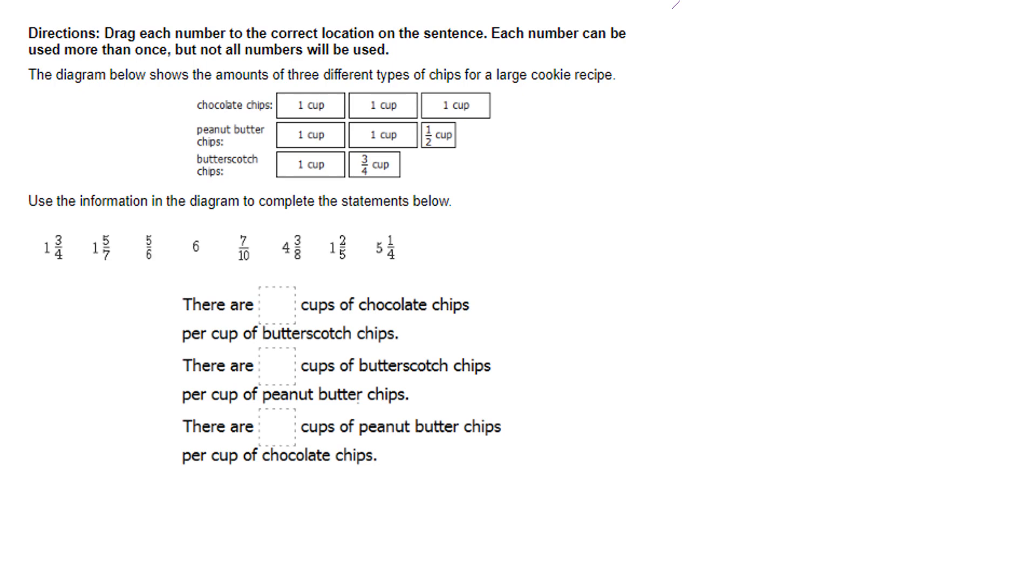The diagram below shows the amount of three different chips for a large cookie recipe. Chocolate chips, let's say one cup, two cup, three cups. I'm going to write down three cups over here. And then, for peanut butter chips, I have one, two and a half. So, I'm going to write two and a half cups. And then, the last one is one and three quarters, or 1.75 cups. I know that these answers down here are in fractions, so we will go back to that. And I will also put fraction equivalent up here, just so that we've got them. Use the information in the diagram to complete the statements below.